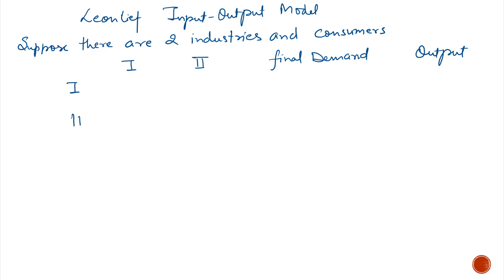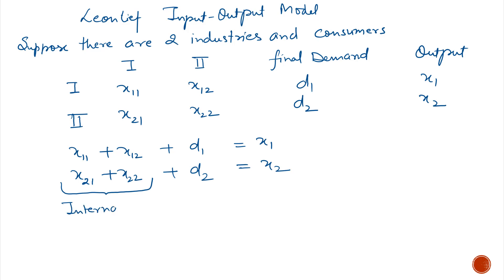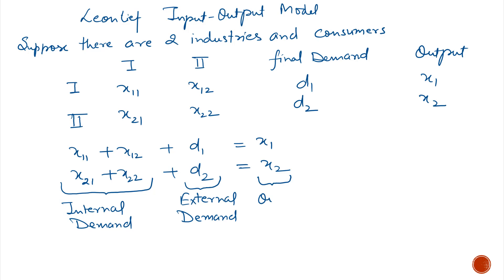The first industry consumes X11 of the first industry and X21 of the second industry. The second industry consumes X12 of the first industry and X22 of the second industry. The final demand is D1, D2, and the output is X1, X2. The sum of X11, X12 and X21, X22 denotes internal demand, and D1, D2 denotes external demand. Internal demand plus external demand equals output.